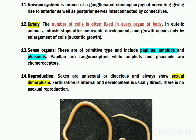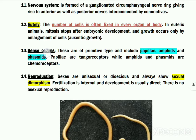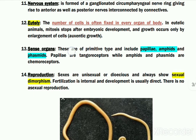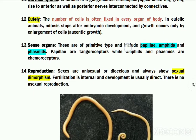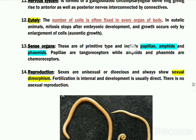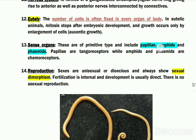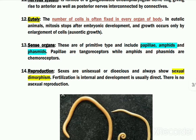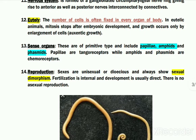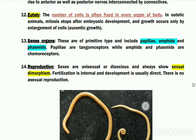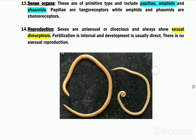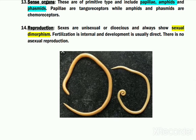These organisms have primitive types of sense organs including papillae, amphids, and phasmids, which are mostly sensitive to chemicals.